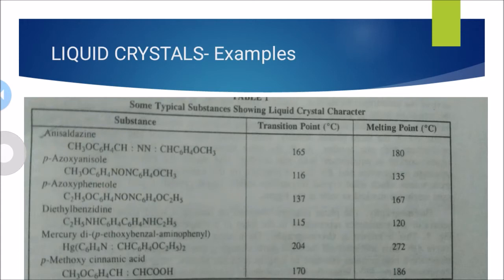Liquid crystals include many materials. The first example is anisol: CH3O-C6H4-CH=N-N=CH-C6H4-OCH3, with a transition point of 165 degrees Celsius and a melting point of 180 degrees Celsius. The second example is paraasoxyanisol: CH3O-C6H4-NO-N-C6H4-OCH3, with a transition point of 116 degrees Celsius and a melting point of 135 degrees Celsius.